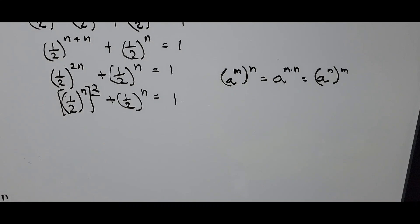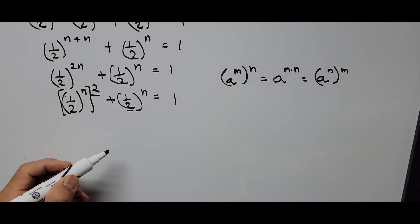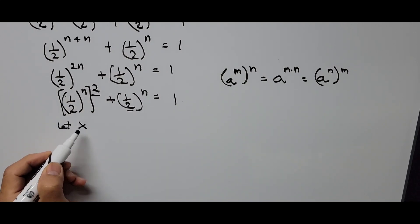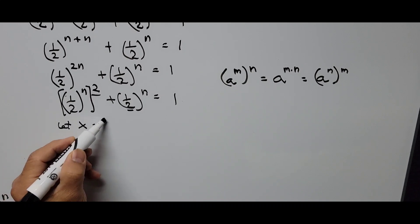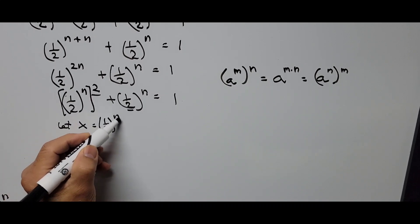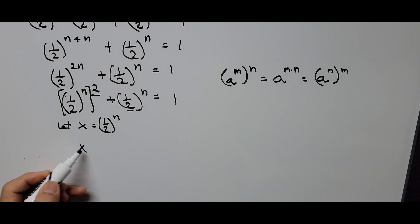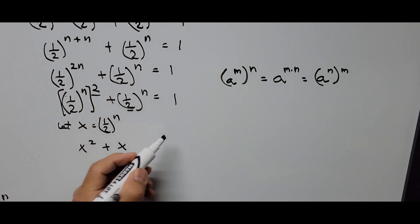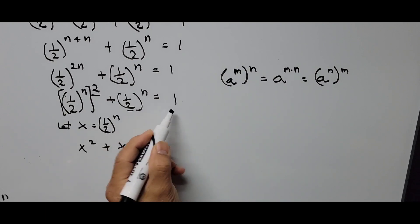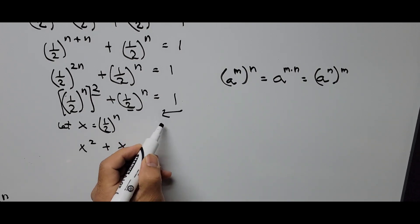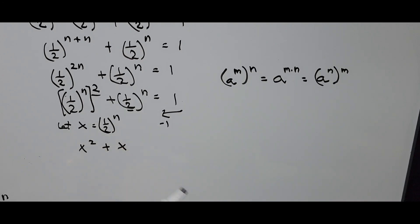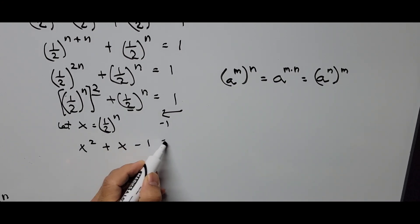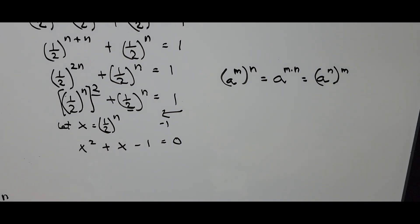We introduce a substitution variable: let x = (1/2)^n. The equation then transforms to x² plus x equals 1, and transposing the 1 to the left side gives x² + x − 1 = 0.